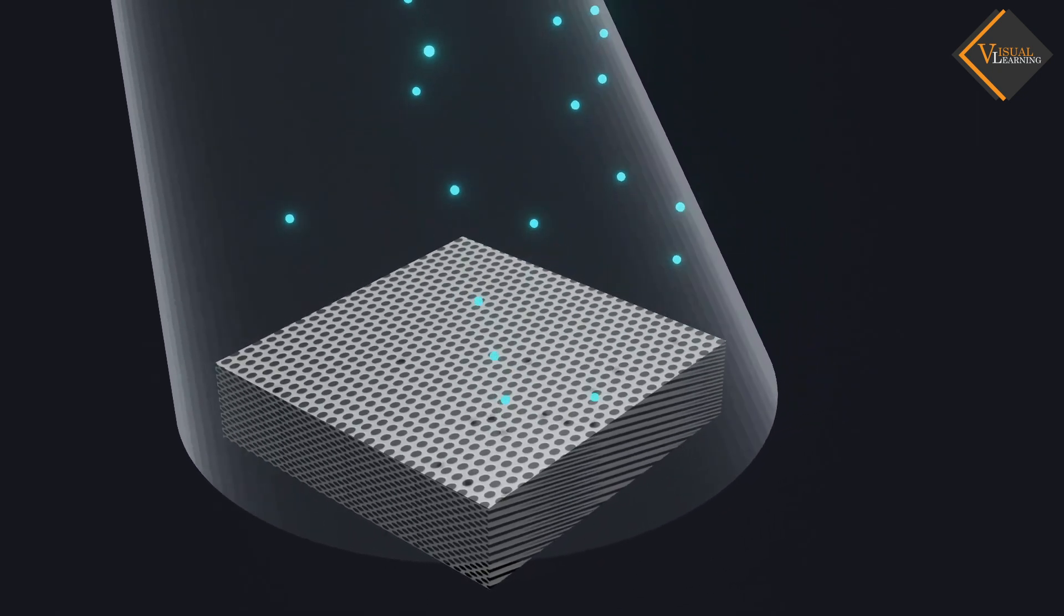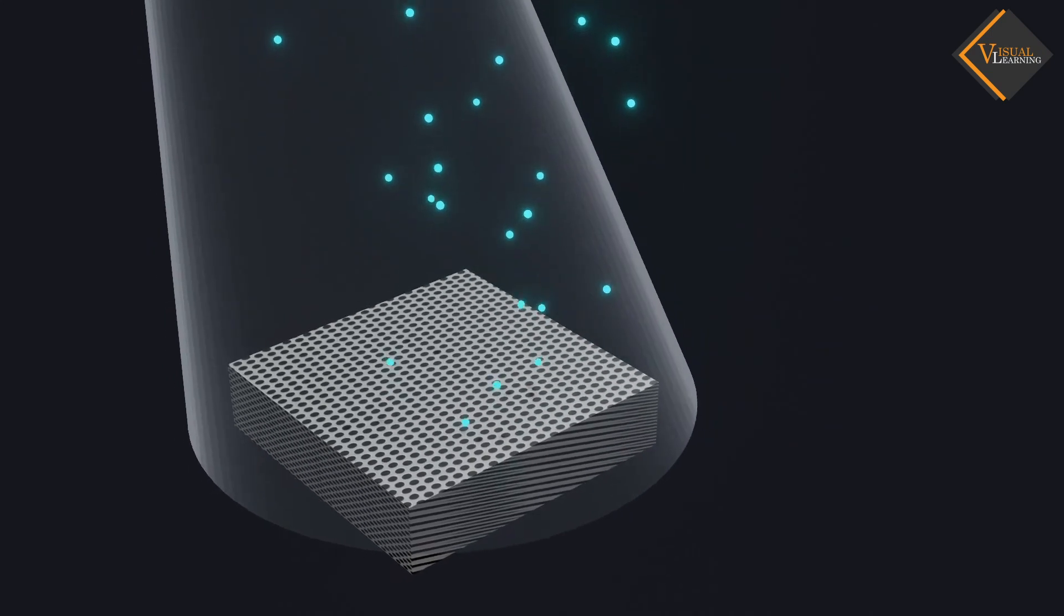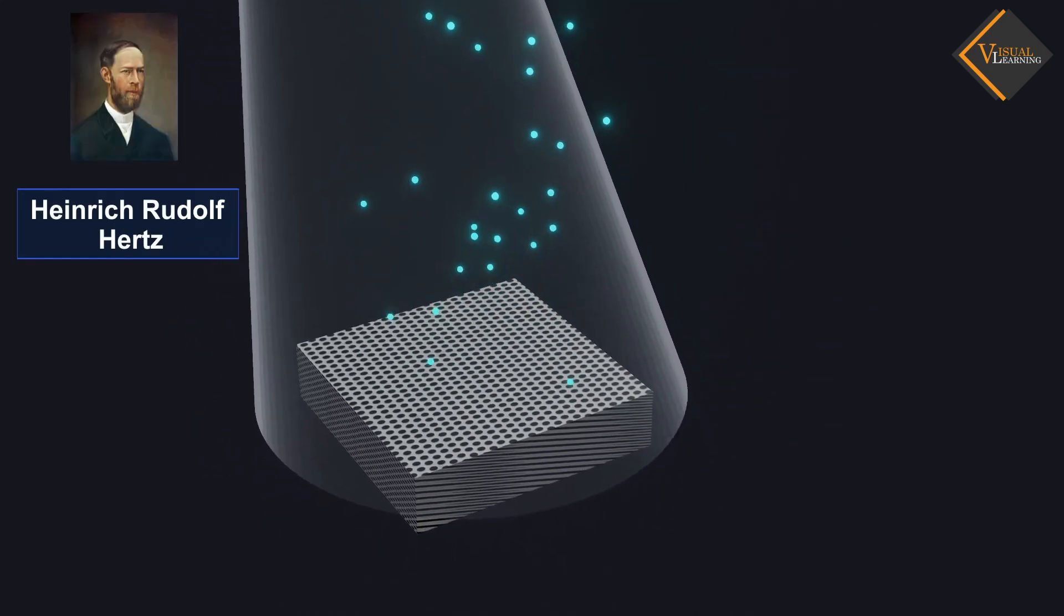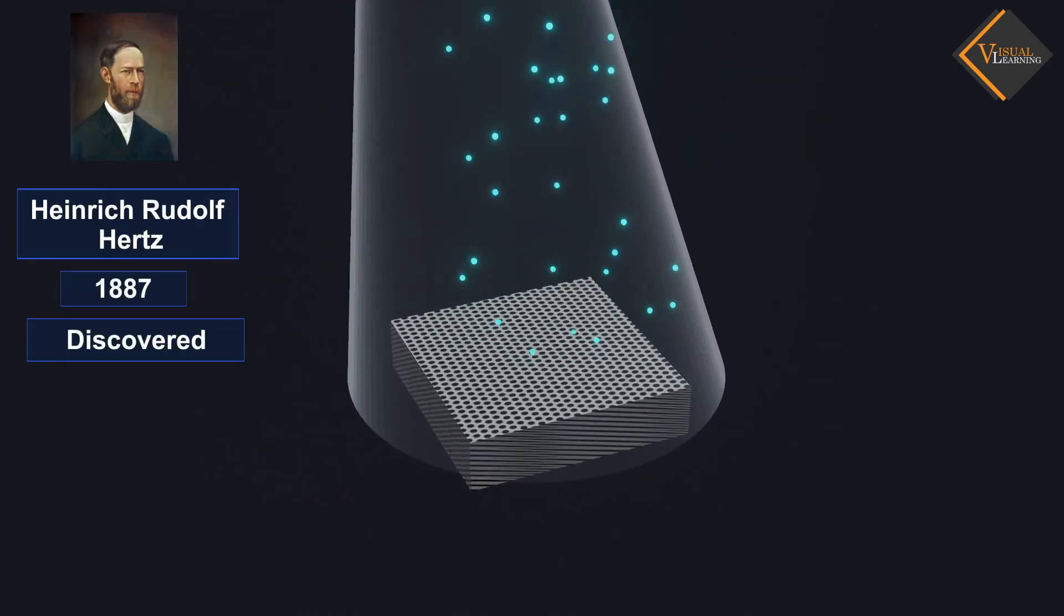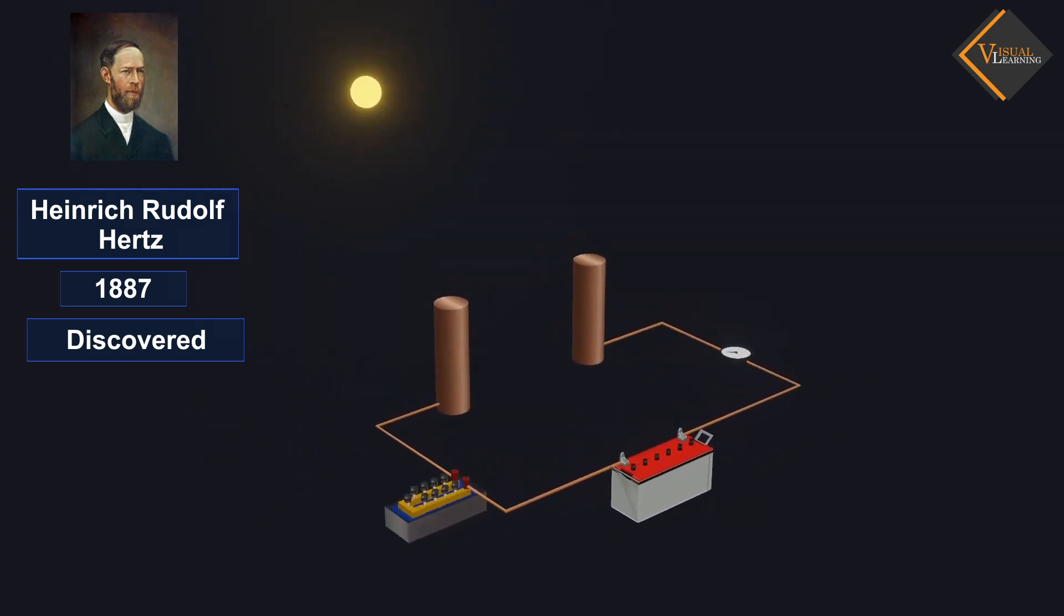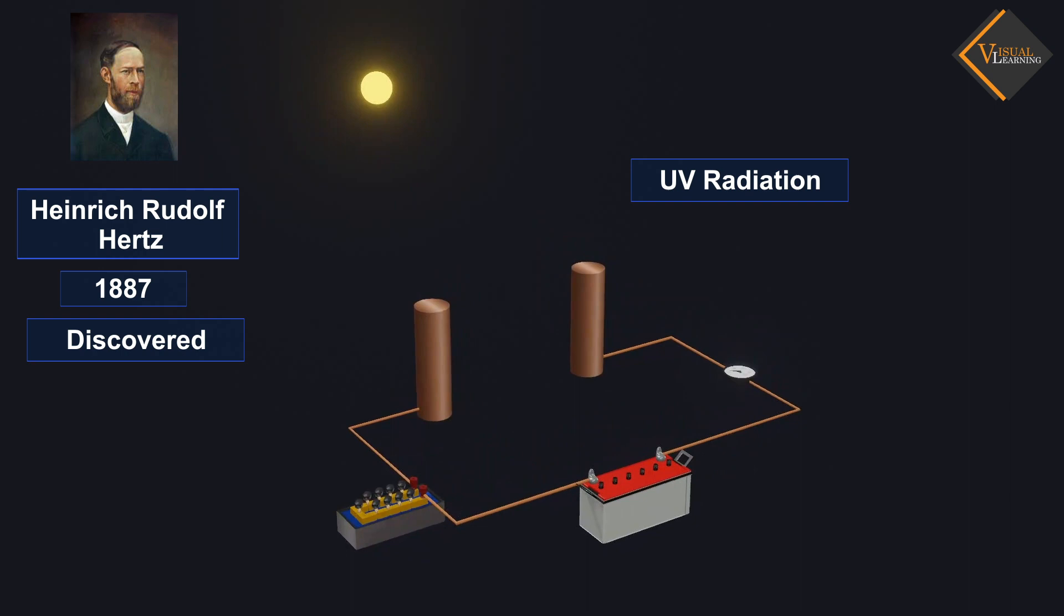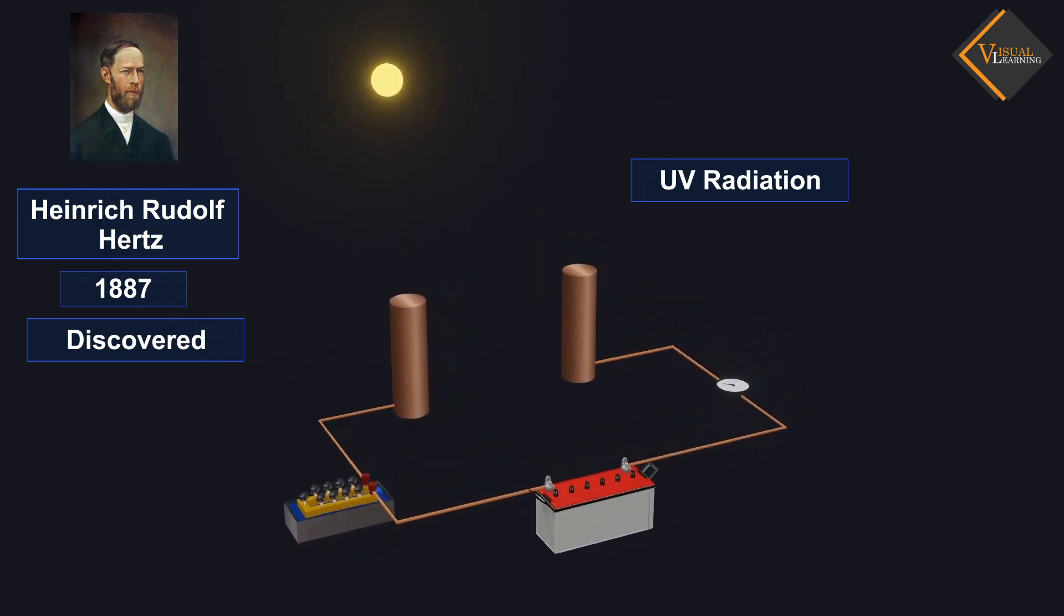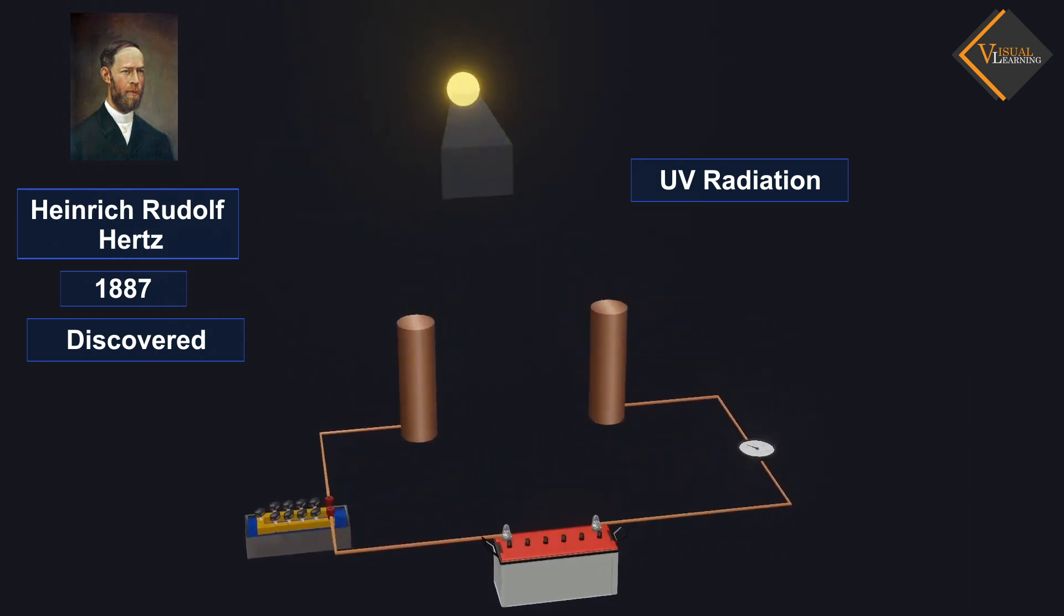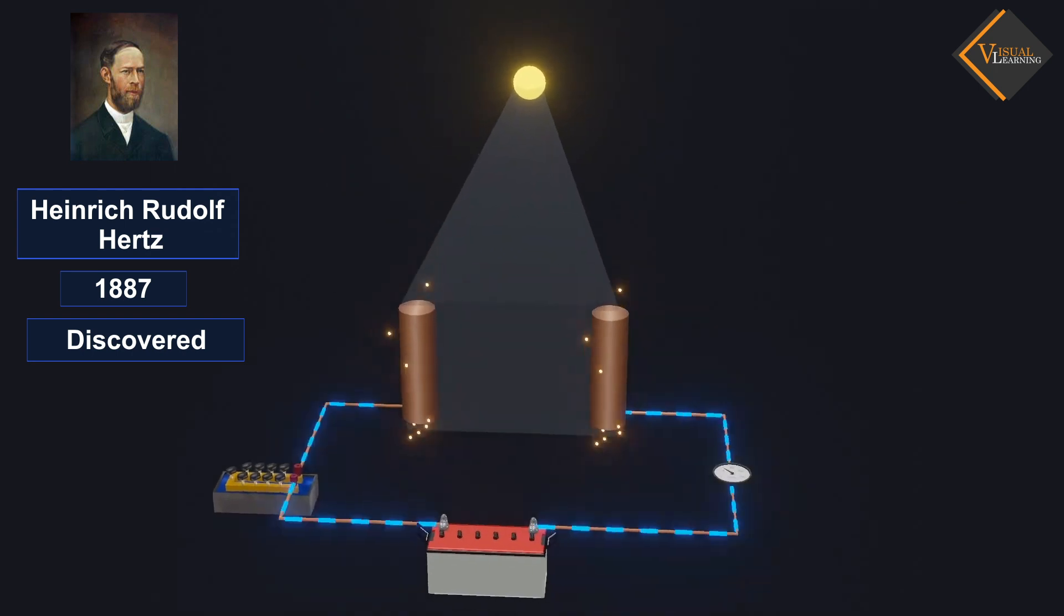This phenomenon was discovered by German physicist Heinrich Rudolf Hertz in 1887. Rudolf Hertz found that whenever ultraviolet light falls onto metal electrodes and a voltage is applied to both electrodes, sparking occurs.